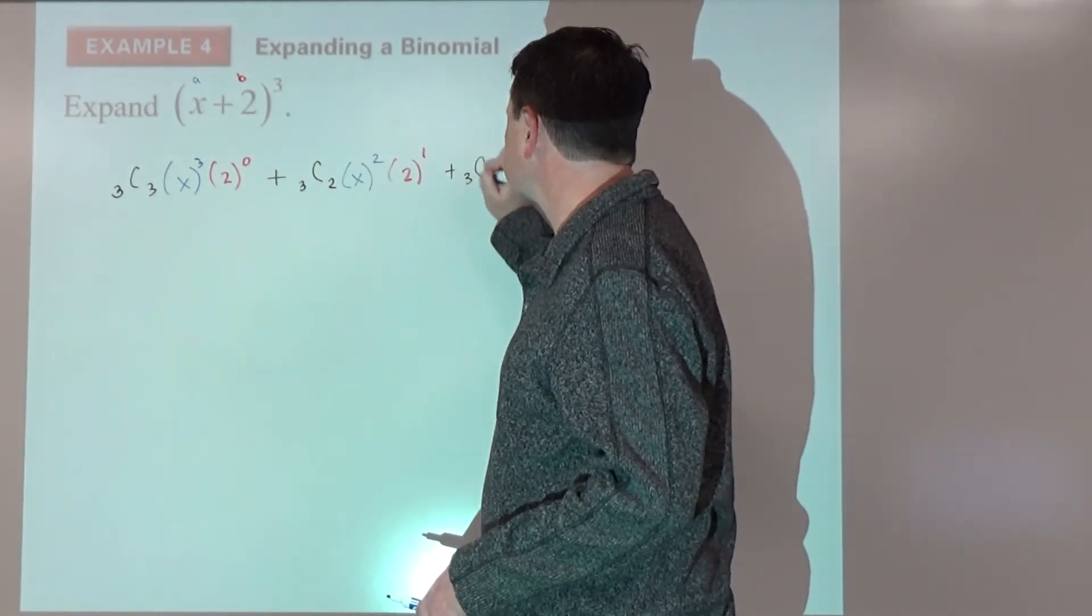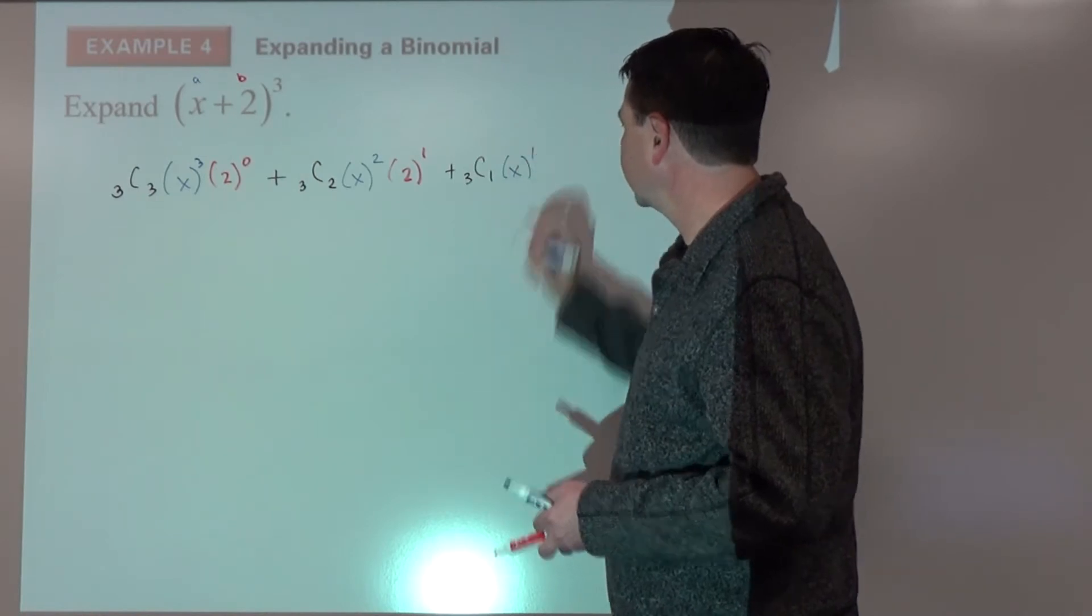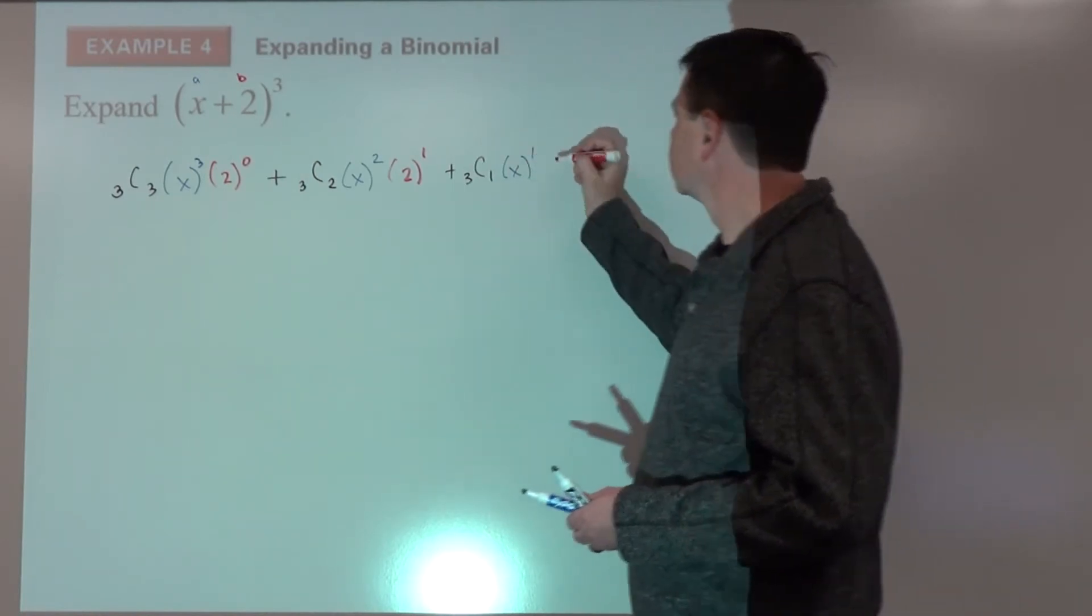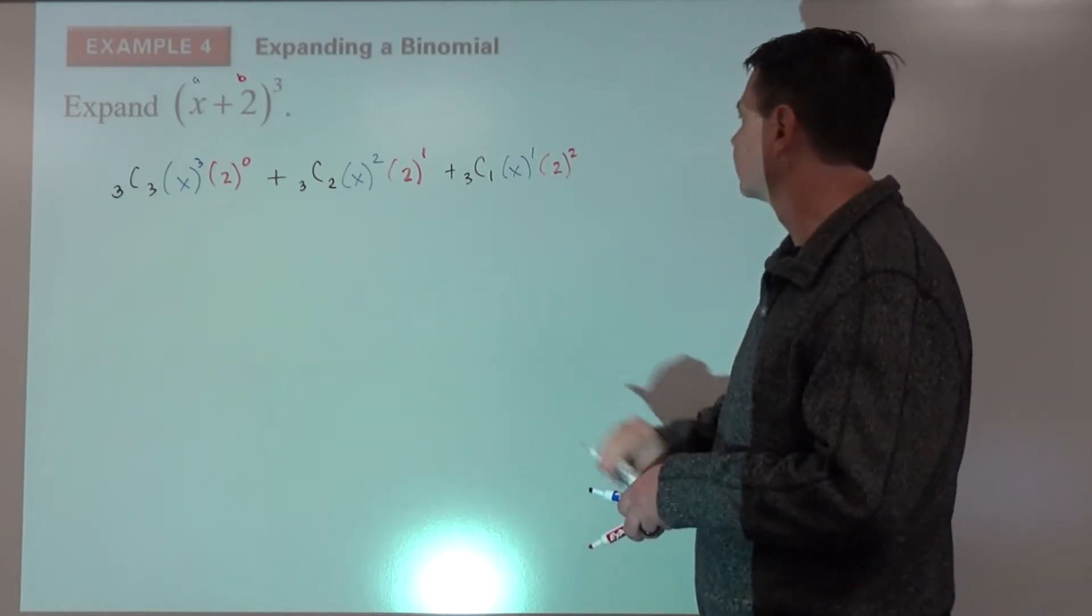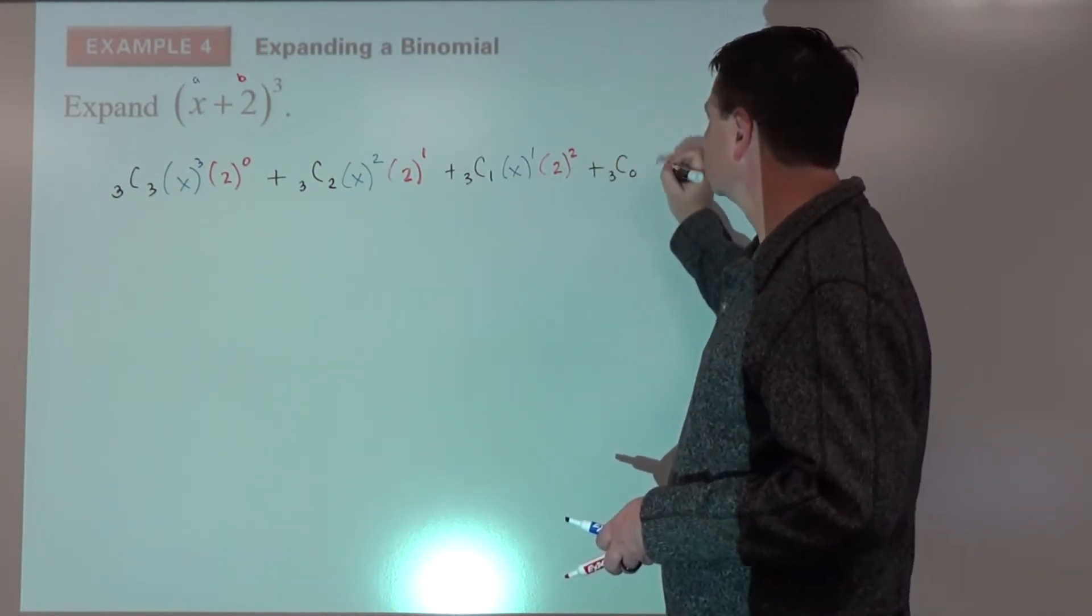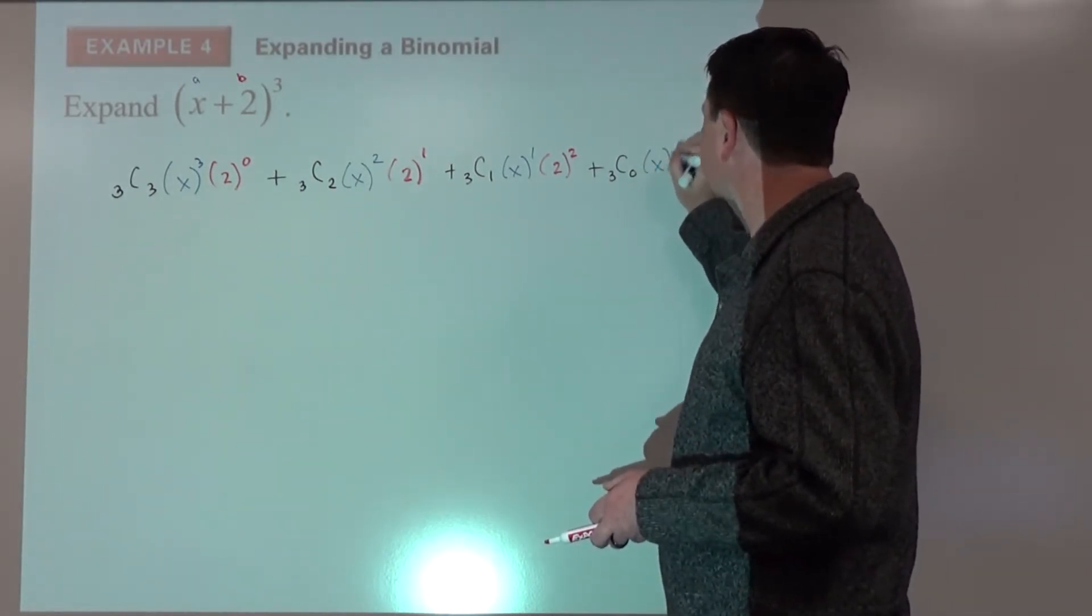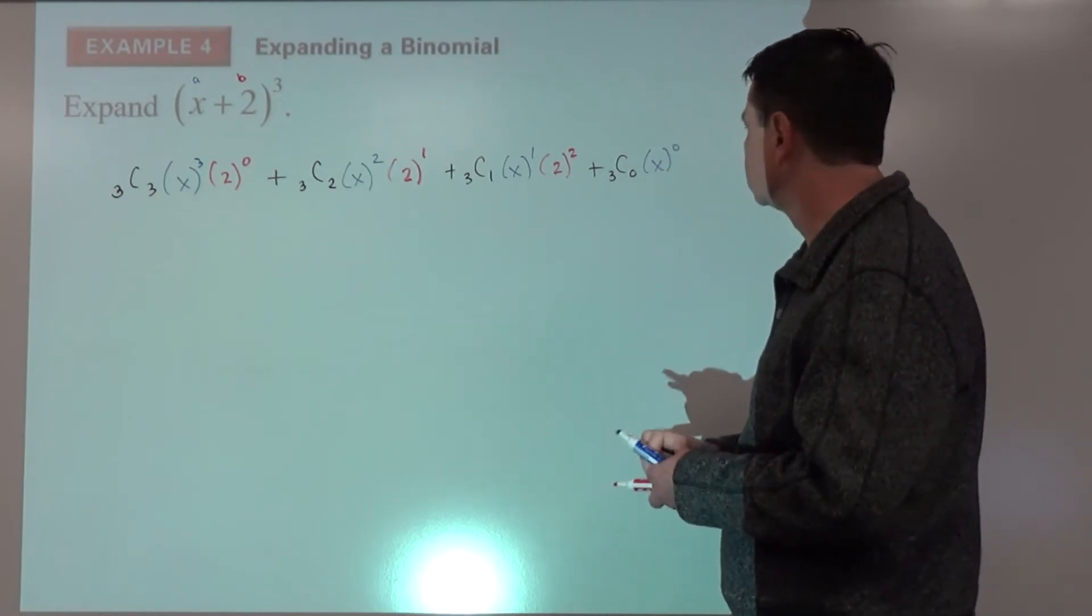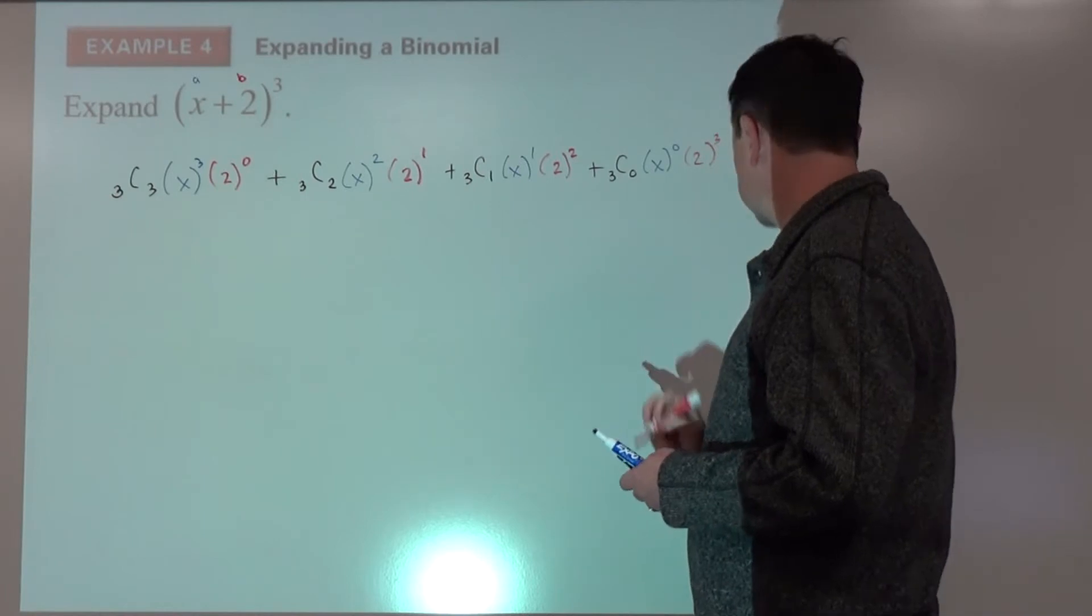Continue the pattern: plus 3 choose 1 times x to the first times 2 to the second, plus 3 choose 0, x to the third, x to the third.